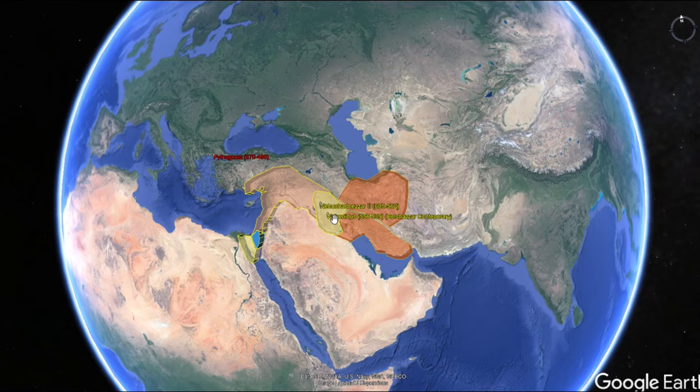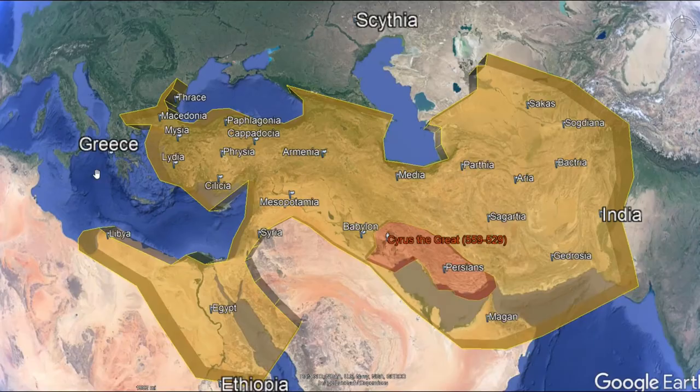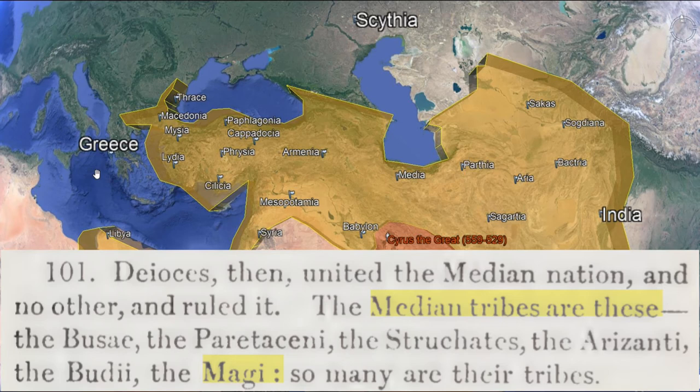Those are the kinds of jewels of detail that we pick up from Herodotus. Let's look at Herodotus again because we have the Magi here. Remember, that's where we get our word 'Magician' from. The Median tribes are: the Busai, the Paretaceni, the Struchates, the Arizanti, the Budi, and the Magi. So many are their tribes. When we say Daniel was of the chief Magicians, remember he was deported into that.